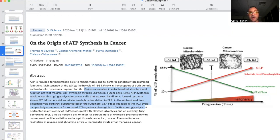We're going to explain later in the series what these are here and what is not present here and why that's extremely important. But that's for another time. Various abnormalities in mitochondrial structure and function prevent maximal ATP synthesis through oxphos, oxidative phosphorylation, in cancer cells. Mitochondrial substrate-level phosphorylation in the glutamine-driven glutaminolysis pathway substantiated by the succinyl-CoA ligase reaction in the TCA cycle can partially compensate for the reduced ATP synthesis through both oxphos and glycolysis. Normal mitochondria make majority of their ATP through the oxidative phosphorylation pathways. Cancer cells do not.